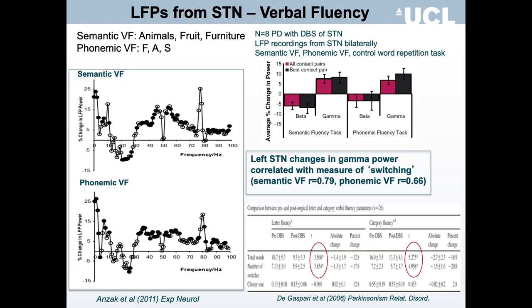Verbal fluency is a task that requires search of associative semantic networks and selection of words or responses that meet the criteria for the task — starting with a particular letter or belonging to a particular semantic category — against competing responses that do not meet the criteria. So it involves response selection under competition as well as other processes.